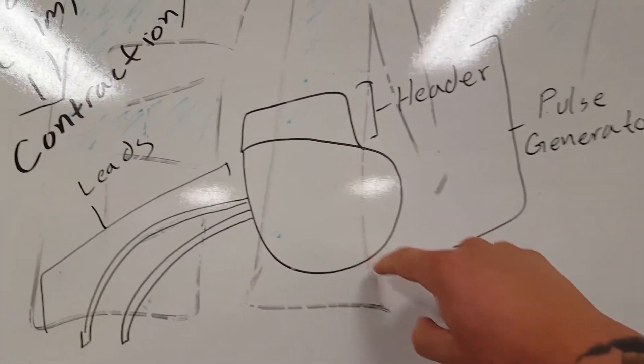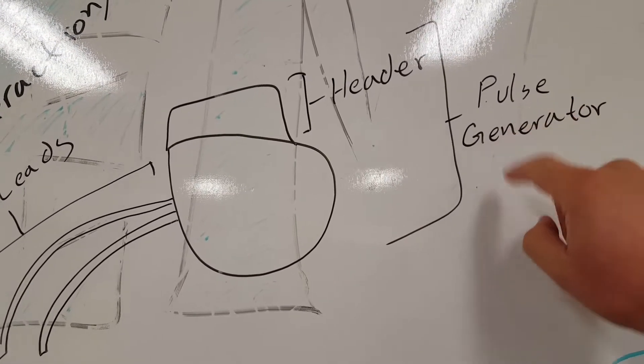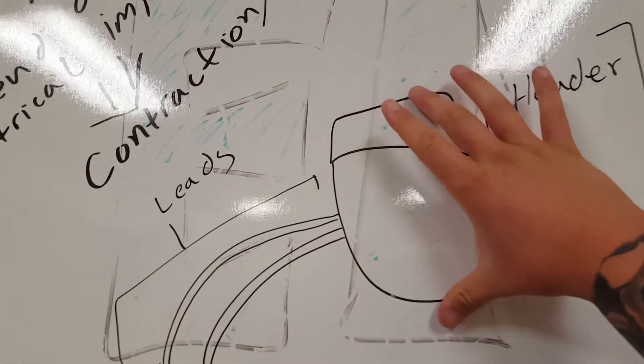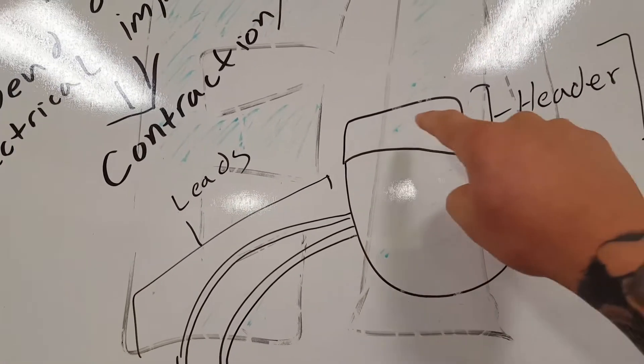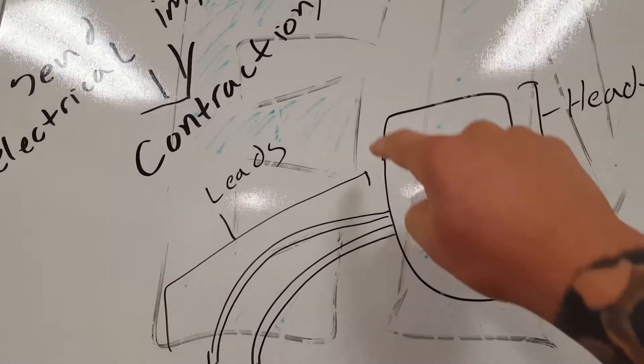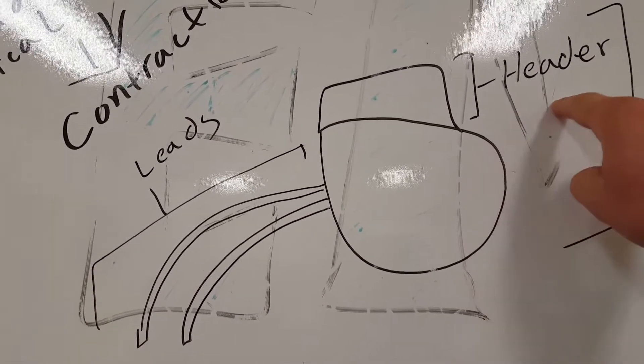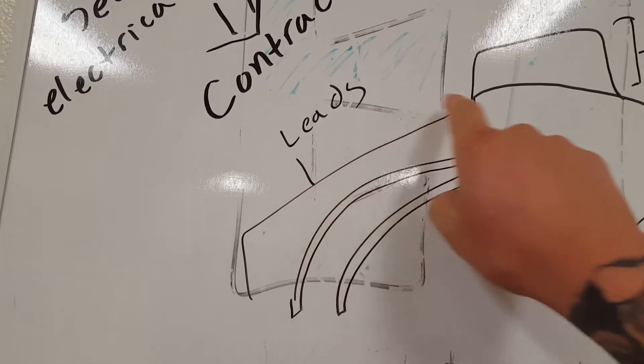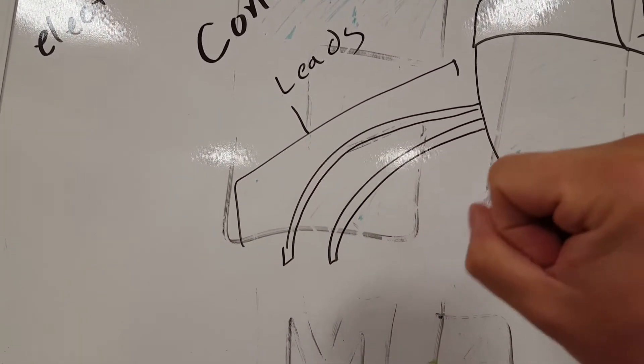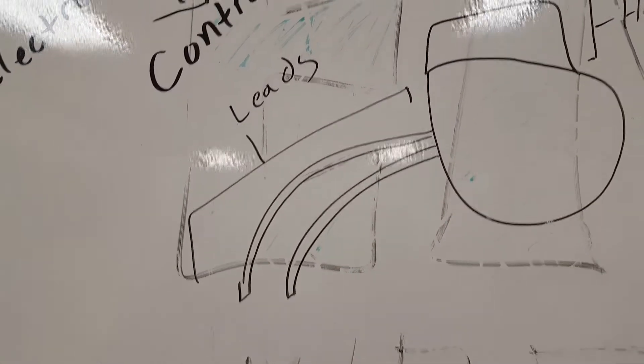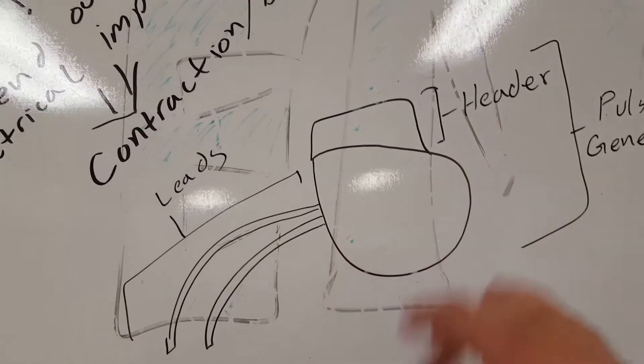So the entire body of the pacemaker is called the pulse generator. The pulse generator is the entire body of the actual pacemaker. Then this little top part, there's like a little squared top part on the pacemaker, is called the header. And then you have the leads. So the leads are what actually go inside the heart and help the heart out when it comes to pacing.